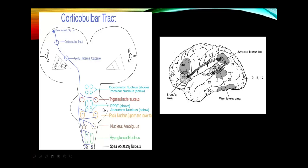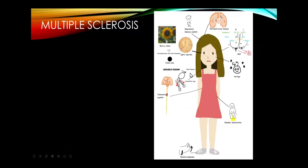The arcuate fasciculus connects Wernicke's area to Broca's area. A lesion here causes conduction aphasia — patients understand what they want to say and can speak fluently, but cannot repeat sentences because they cannot move the command forward to Broca's area.